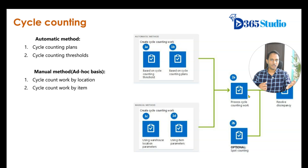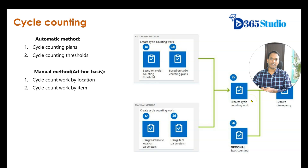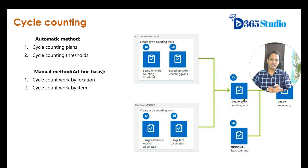Physically, the warehouse worker goes to that particular location and reports the real counted quantity. If any discrepancies are identified — for example, if the on-hand quantity is 10 but the counted quantity is 8 — that discrepancy will be reported. The discrepancy will then be reviewed by a cycle counting supervisor. Once reviewed, the system can adjust the inventory on hand to reflect the real quantities in the location.